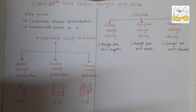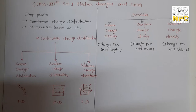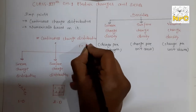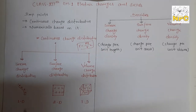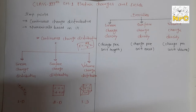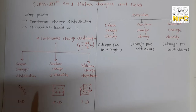Today's important point is continuous charge distribution. Until now, we studied how a point charge generates an electric field - the formula is E = kQ/r². But now we are going to study continuous charge distribution. There are three types: first is linear charge distribution, second is surface charge distribution, and the last is volume charge distribution.